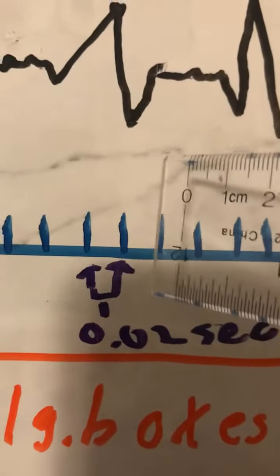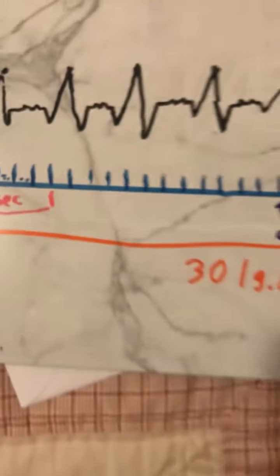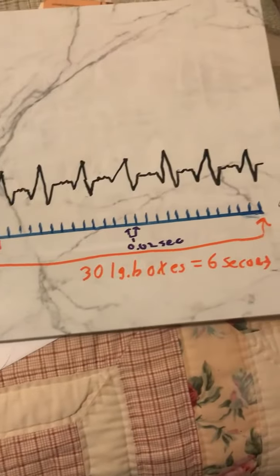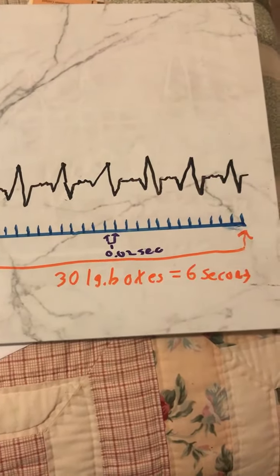One small box is 0.02, which means five of them is one. So six seconds is 30 boxes, and if you multiply six seconds by 10, that's one minute.